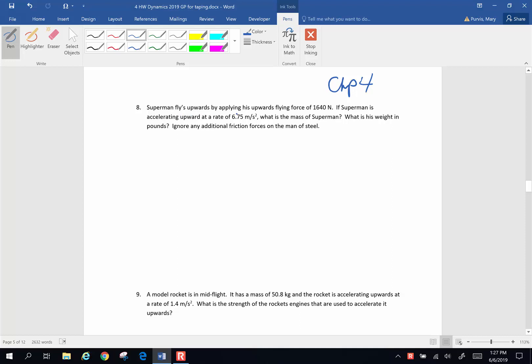Superman's flying upward by applying his upward flying force of 1640 newtons. If Superman is accelerated upward at a rate of 6.75 meters per second squared, what's the mass of Superman? And then what is his weight in pounds? Ignore any additional friction forces on the man of steel. So here we have Superman. We're going to have him have some legs because that's always handy for Superman. He's got his fist of flying, and then we're going to give him a cape because superhero always need capes.